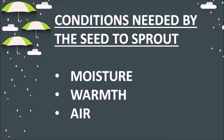Through this video, it must be clear to you how a seed can develop into a sprout. Can you now tell me the conditions needed by the seed to sprout? Well, there are three important conditions: moisture, warmth, and air. Every living being needs air, water and optimum temperature for its survival. Similarly, when a seed develops into a seedling or a baby plant, all these conditions must be present for it to survive.